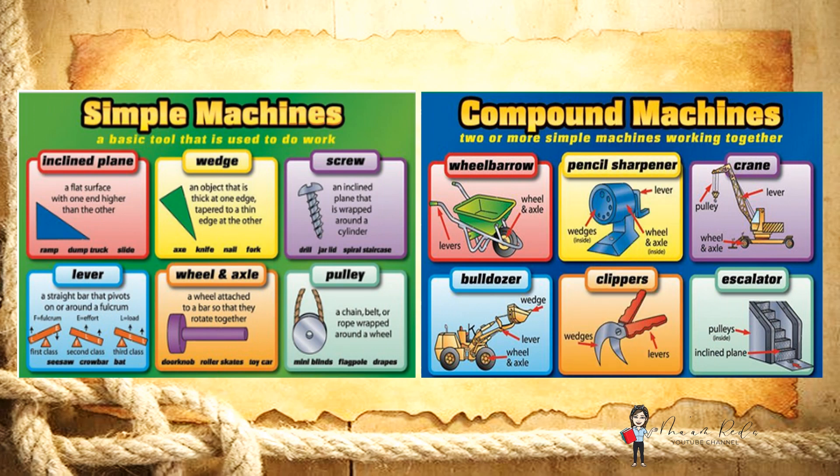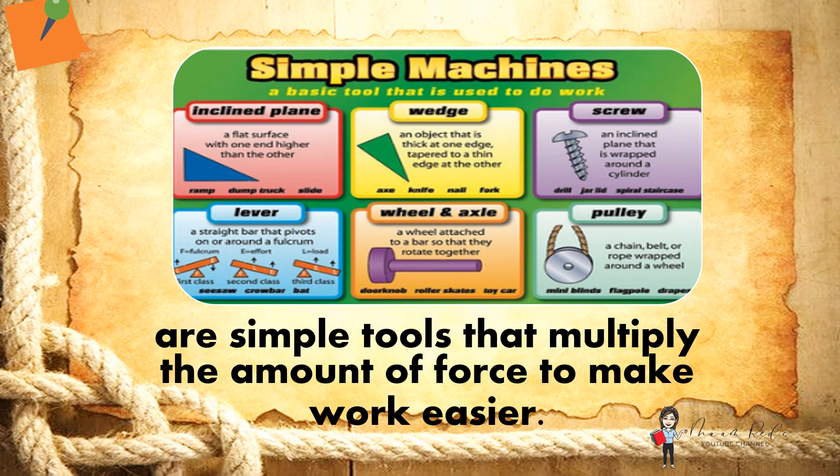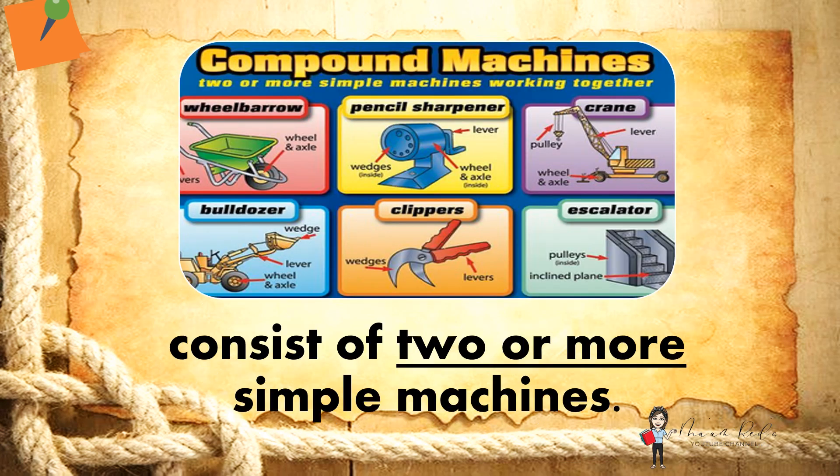A machine can be classified as simple machine and compound machine. Simple machines are simple tools that multiply the amount of force to make work easier. Compound machines consist of two or more simple machines.